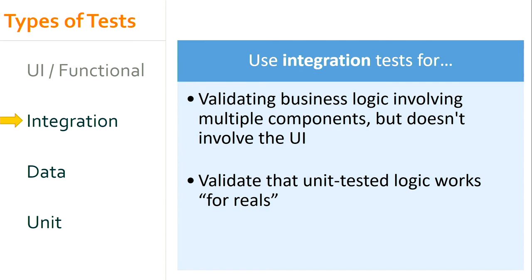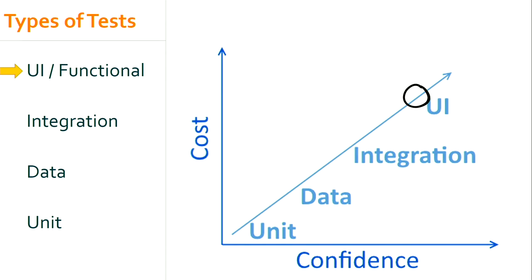We primarily use integration tests when business rules are spread across multiple components. We have lots of code dealing with form posts — lots of logic, data validation, various components doing things. We have unit tests for all those pieces in isolation, but we get a lot of value from knowing that overarching business rule will happen for real. We don't need the UI to validate that — we can call that method, go to the database, and see what changed. If we can't unit test our logic or data business rules, we'll do them with an integration test. We try to avoid testing business rules in the UI.